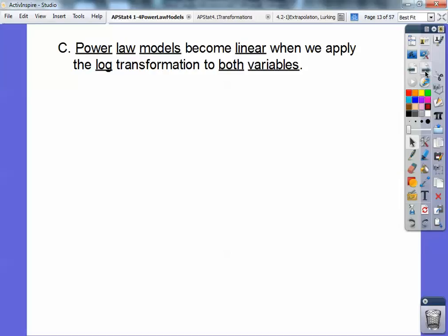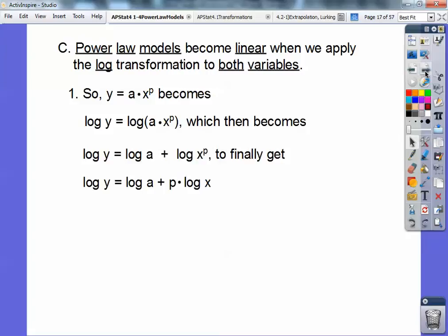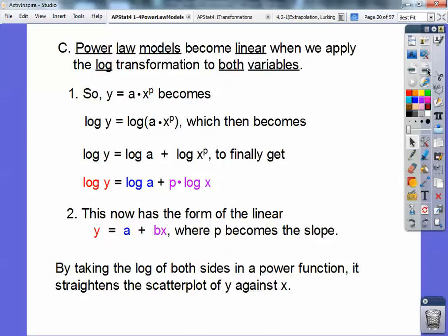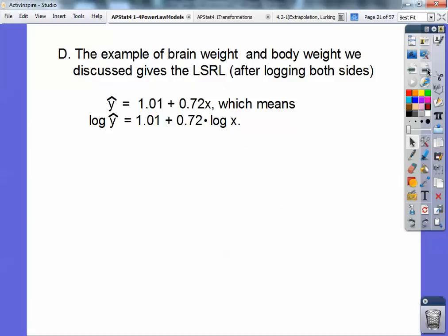Power law models become very linear when you apply the log on both variables, both the x and the y. Remember, exponential, we just applied the log on the y. So when you log both sides of this little guy, you get that equation, which expands to that right there, and that p will come down to get out in front. So when you log, you're going to get that function right there. This now has the form of y equals a plus bx, where p becomes the slope. Just remember, you guys, that y stands for the log of y and this bx stands for the p log of x right there on power functions. So by taking the log of both sides, it'll straighten out your scatterplot of y against x.